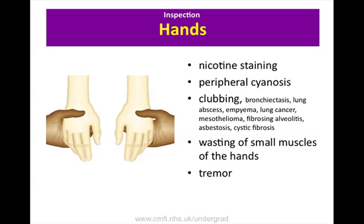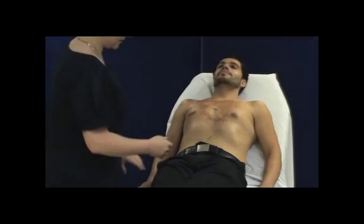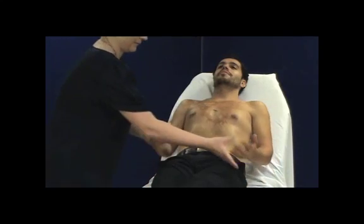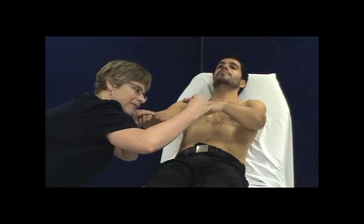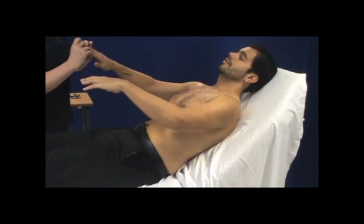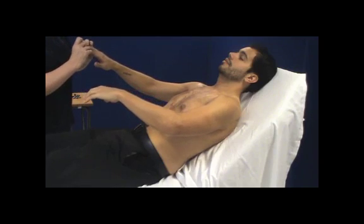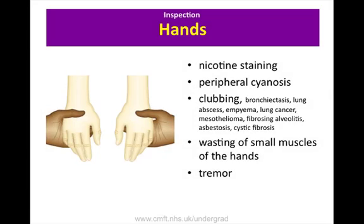When examining the hands, always compare right with left. Look at the hands for nicotine staining, peripheral cyanosis, finger clubbing, wasting of small muscles of the hands and tremor. Finger clubbing is most commonly found in lung cancer, fibrosis or chronic infection such as cystic fibrosis and lung abscess.